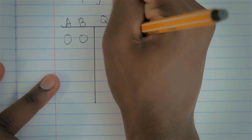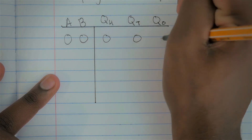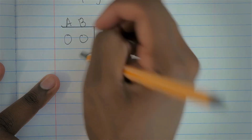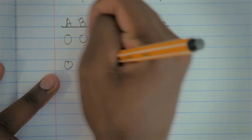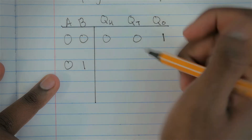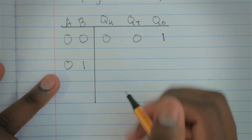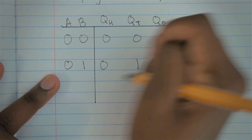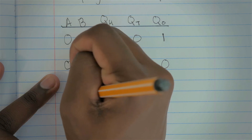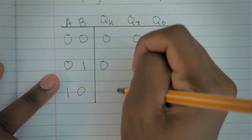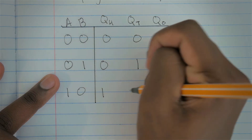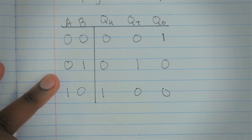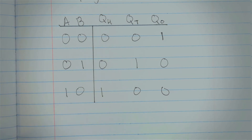When the inputs are zero-zero we're outputting the ones place, so Q_hundreds is off, Q_tens is off, and Q_ones is on. When it's zero-one we're on the tens place, so Q_hundreds off, Q_tens on, Q_ones off. For one-zero it's the hundreds place, following the same pattern.